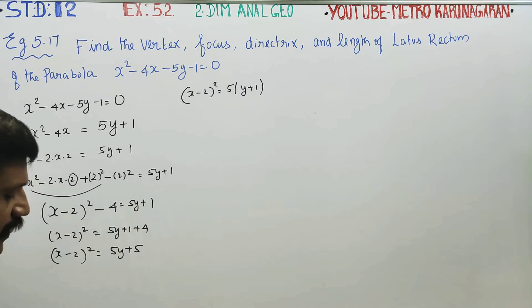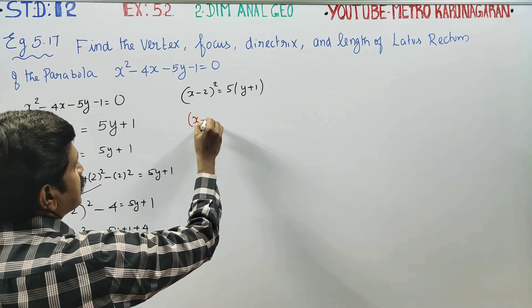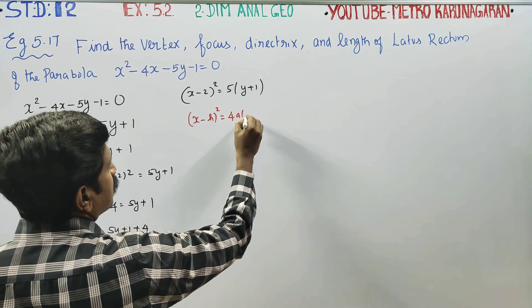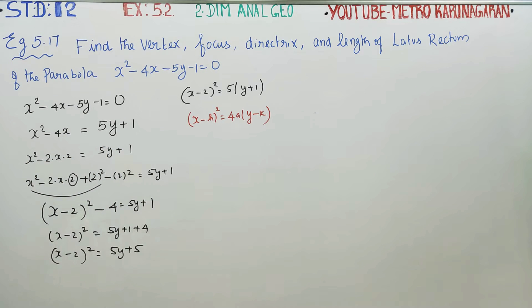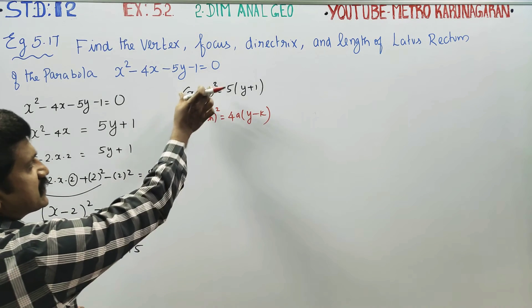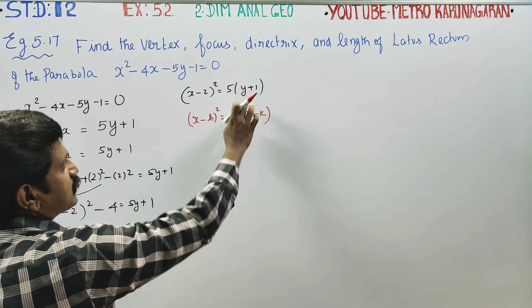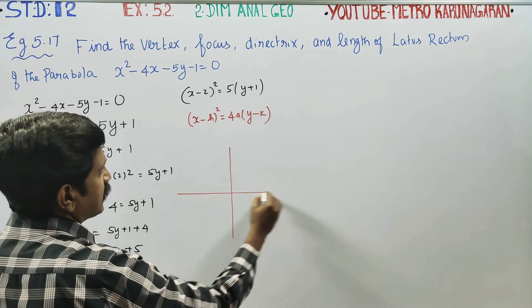Now you can match this to the standard formula. Match: (x - h)² = 4a(y - k). So x minus 2 whole square equals 4a into (y minus k). Matching the formula: comparing both sides, h = 2, k = -1, and 4a = 5, so a = 5/4.